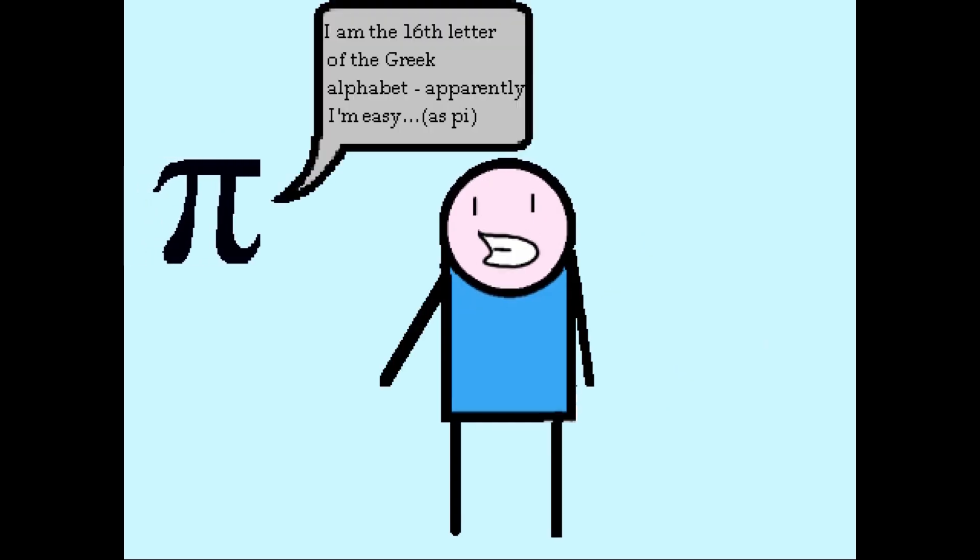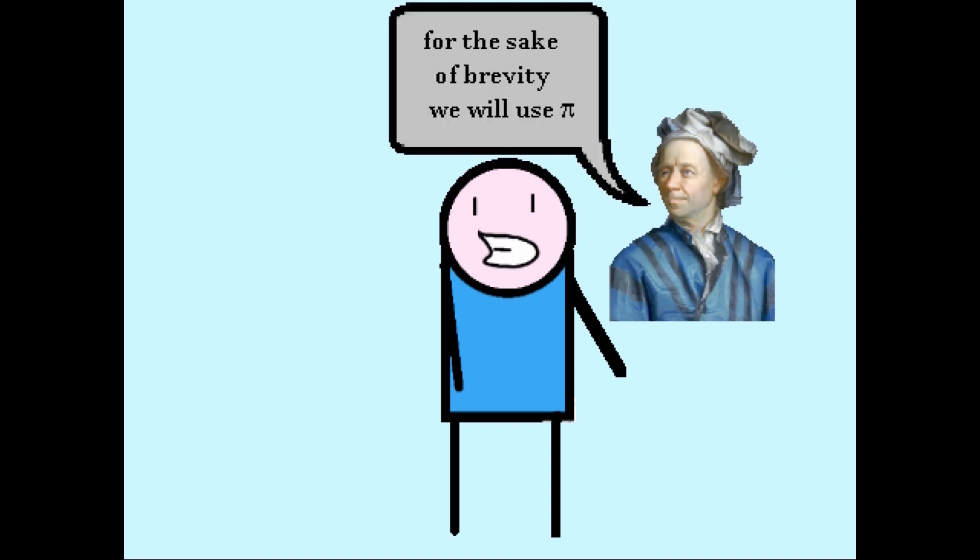Pi is represented by the 16th letter of the Greek alphabet. The mathematician Leonard Euler first proposed a symbol back in the 18th century.